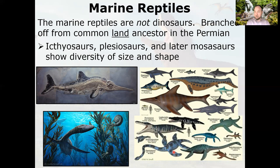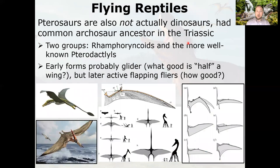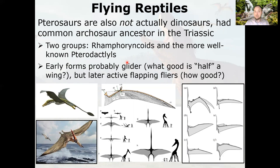Pterosaurs are also not dinosaurs, though a bit more closely related. There are two groups: the rhamphorhynchoids and the more well-known pterodactyls. The earliest pterosaurs, when first evolving toward the wing, didn't have a fully developed wing for flapping — something that allows you to glide and extend your leap is better than nothing, and later it evolved into flapping flight. There's some debate about exactly how the wings attached. Flying reptiles are not dinosaurs.